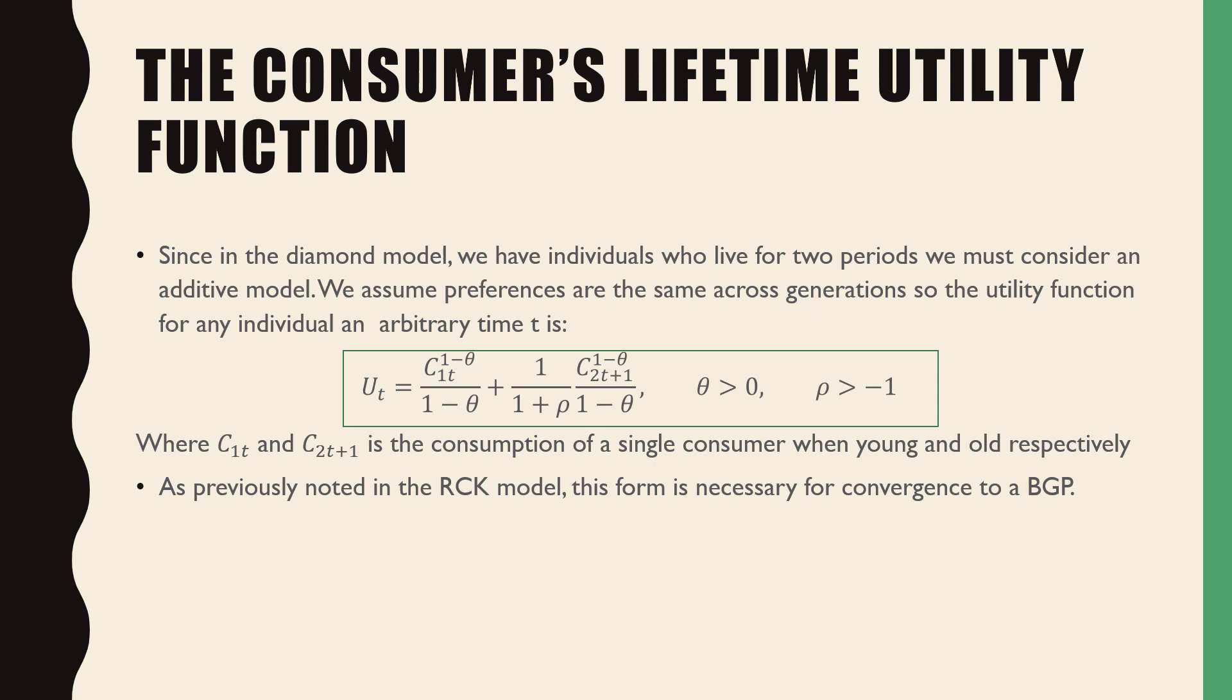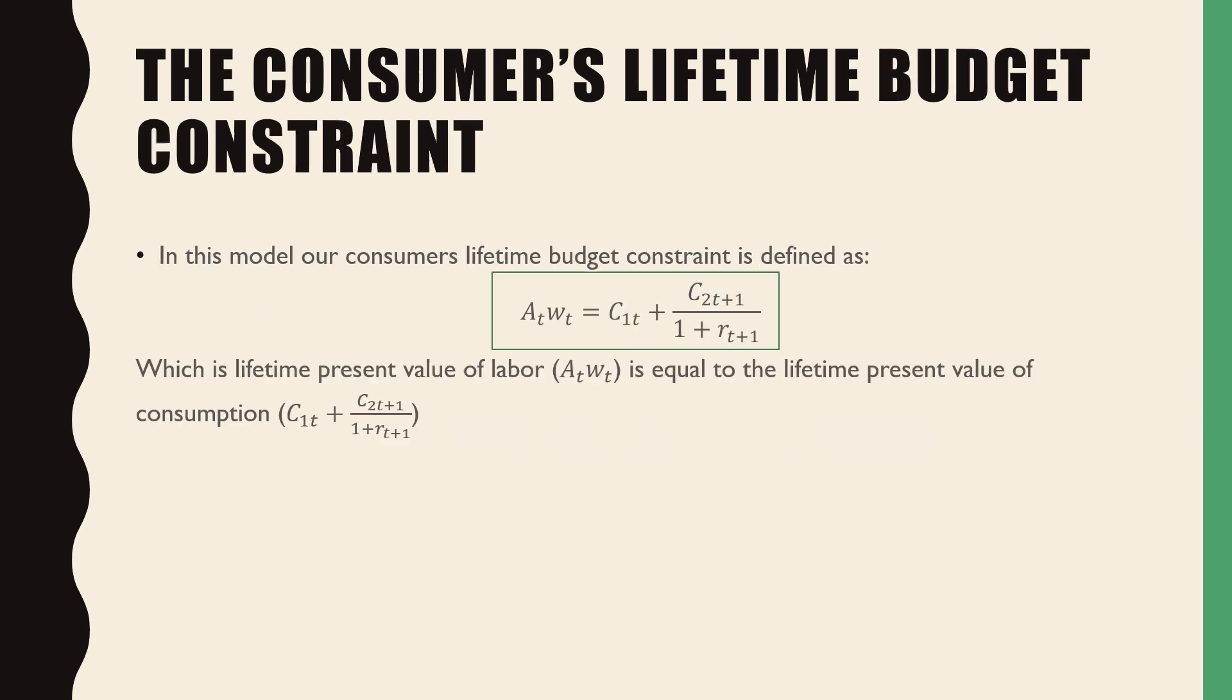As previously noted in the RCK model, this form is necessary for convergence to a balanced growth path.